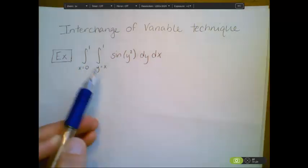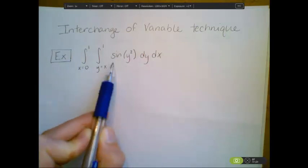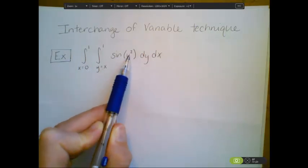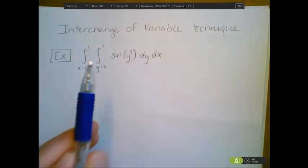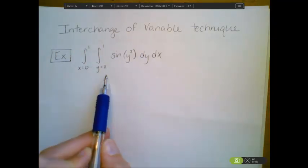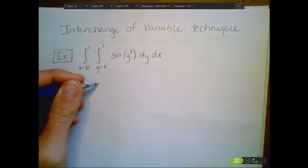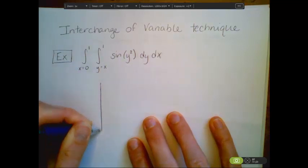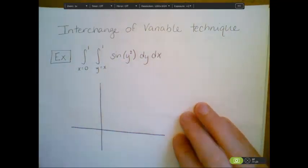The motivation here is that if I try to integrate this — if I start just by integrating with respect to y — the sine of y squared is something we don't have a closed form for integrating. We would have to go to a Taylor polynomial. So instead, we're going to integrate with respect to x first, which means we need to interchange the order of integration. I need to start by drawing a picture of the region of integration.